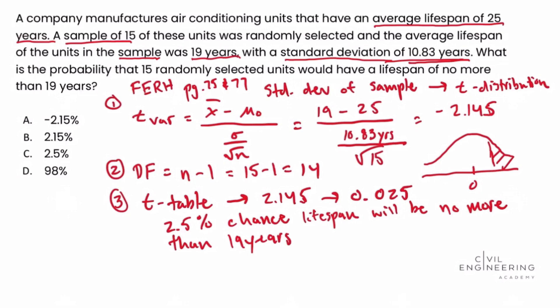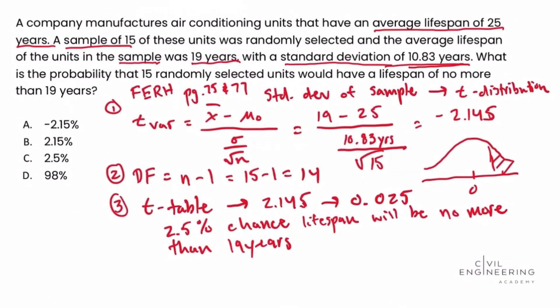So if we look back here at the problem statement and we look at our answer choices, we see that that is equivalent to answer choice C, 2.5%, and we've solved this problem successfully. So the t distribution can be tricky, but if we know how to work through it and keeping in mind that key, that if we're given the standard deviation of a sample, we know we need to use the t distribution, that will help us keep us on track and guide us to the right solution. So if you're looking for more practice, head on over to civilengineeringacademy.com and check out our ultimate FE civil exam review course and we'll see you there.